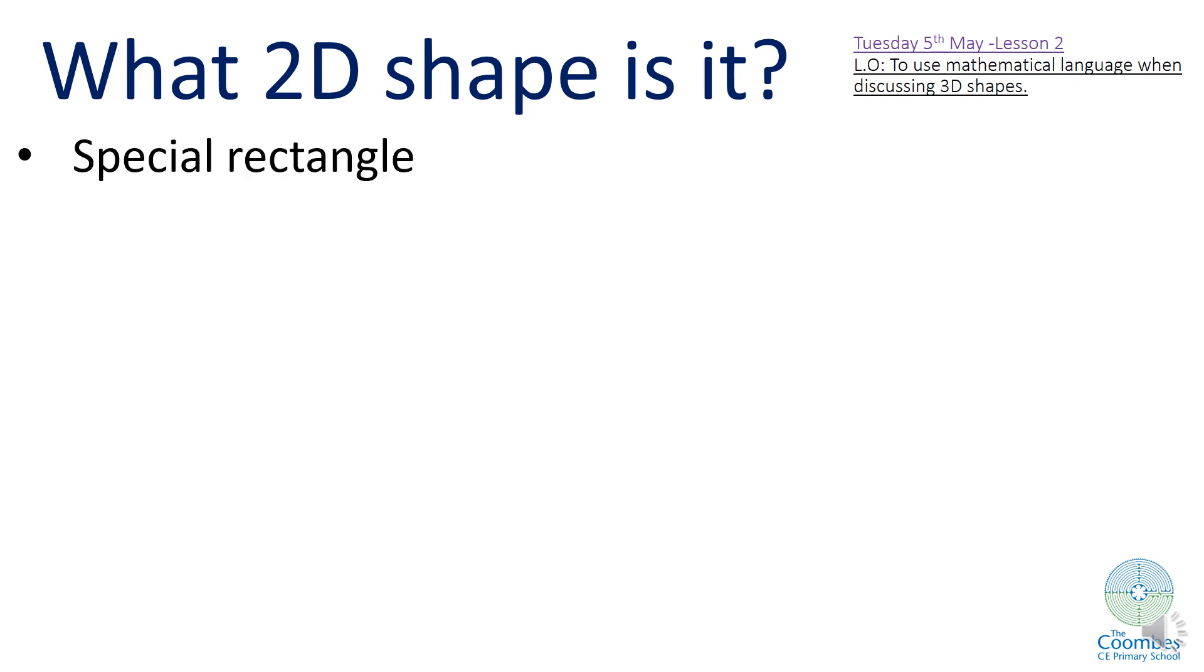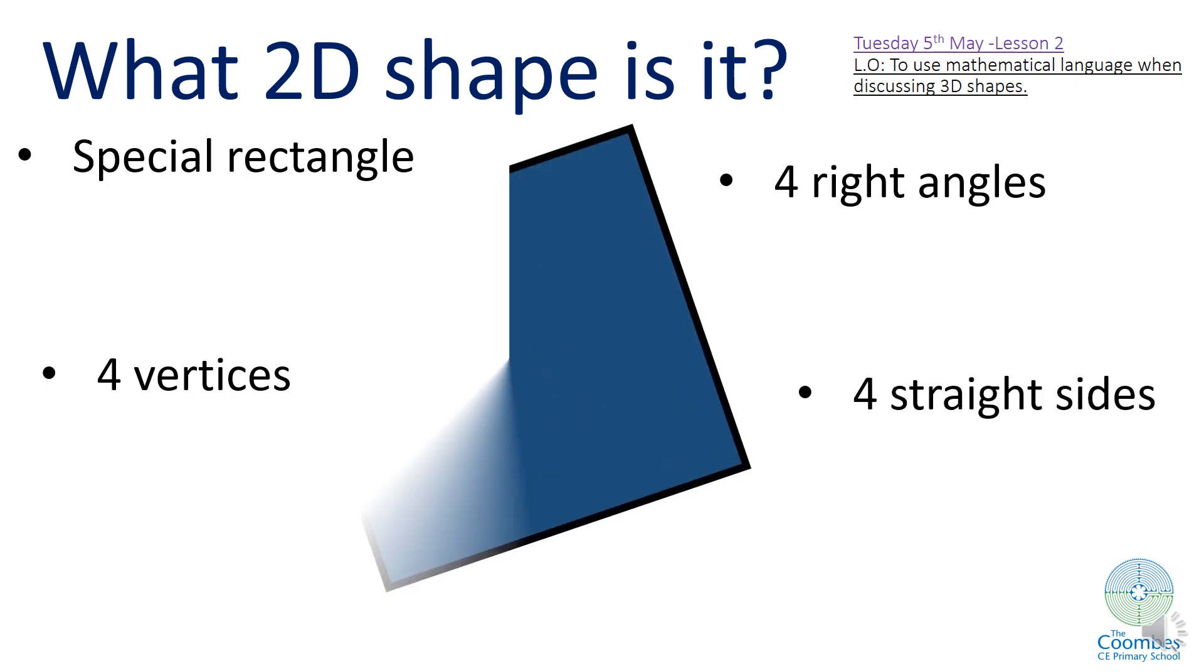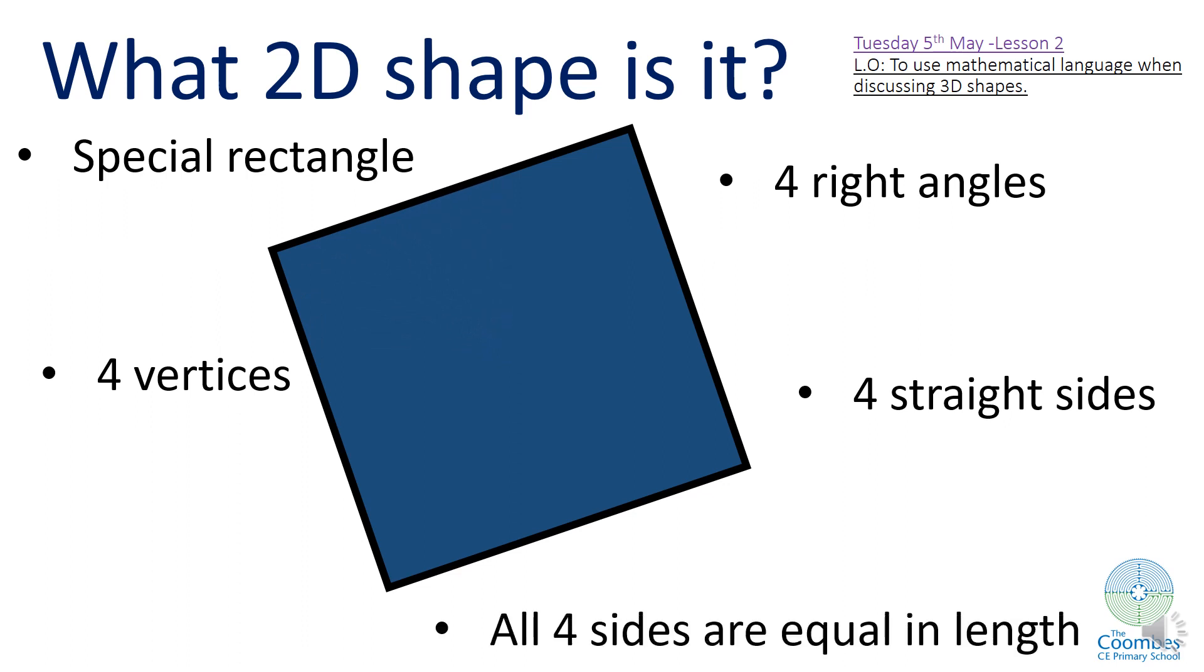So this 2D shape is a special rectangle. It has four vertices—remember vertices are the points where the sides come together to make a pointy bit that we call a vertex. So this shape is a special rectangle. It has four vertices, it has four right angles, it has four straight sides. All the sides are equal in length. What is it? It's a square. Brilliant, well done.